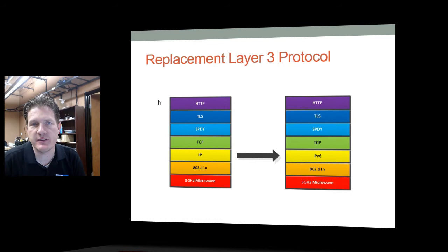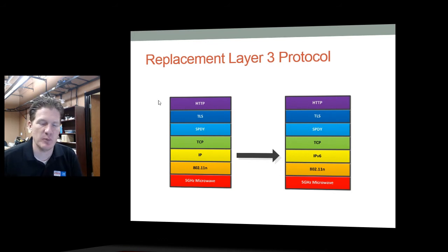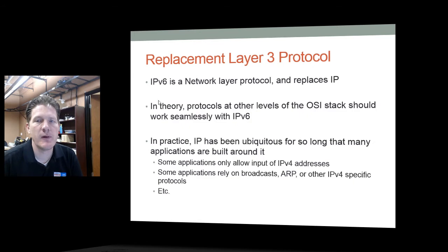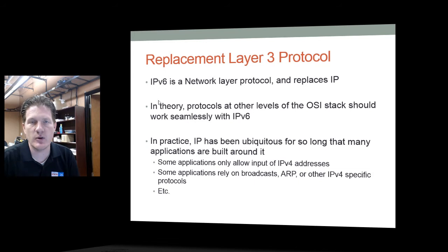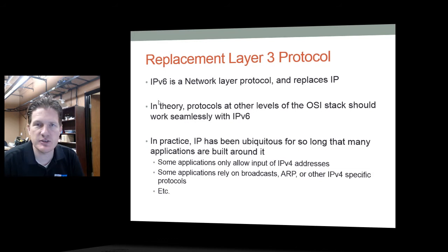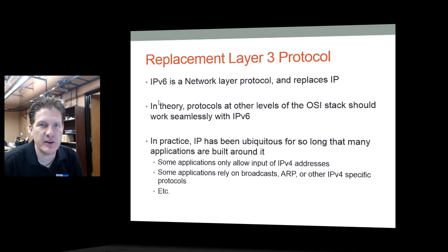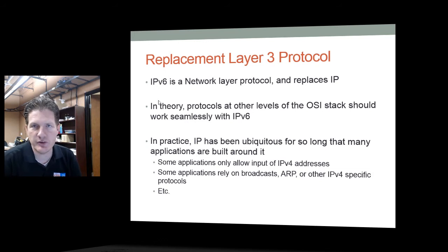IPv4 operates at Layer 3 in your typical networking stack, and IPv6 is a replacement for that protocol. IPv6 is a network layer protocol in the same way that IPv4 was. Other protocols at the other layers in the OSI model should work perfectly with IPv6 — meaning transport layer and data link layers should work with IPv6 just as they worked with IPv4. This is theoretical, and as we come up with enhancements and improvements to IPv6, we'll likely discover shortcomings with protocol interaction.